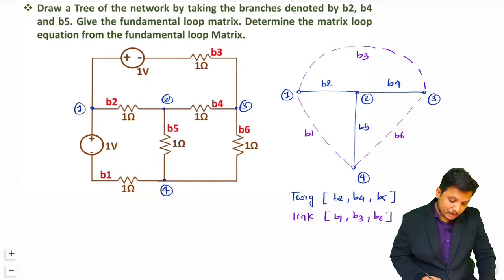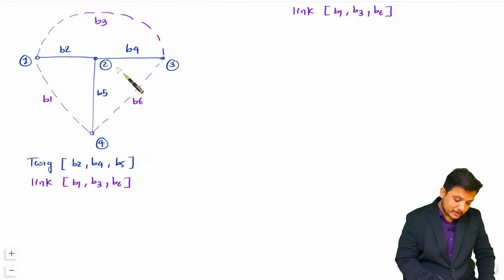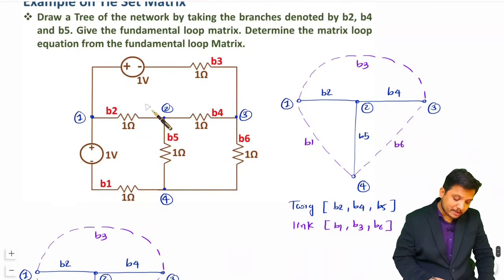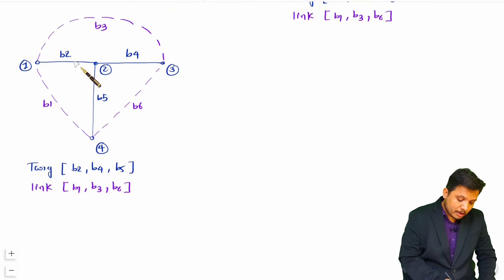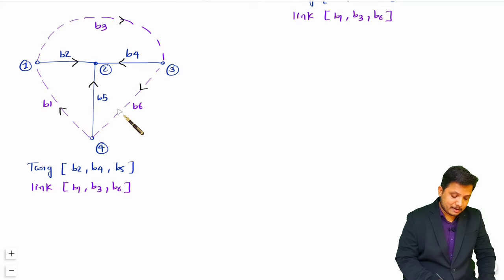Now I will explain how to form the fundamental matrix. Taking this graph, we can consider directions randomly since the question does not provide them. If direction is not given you can consider it randomly. For forming the tie set matrix you need to have directions, so I am just considering them randomly right now, and whatever calculations follow will justify our answer.